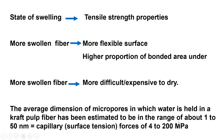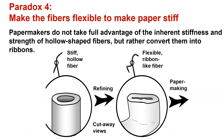Paradox number four: make fibers flexible to make paper stiff. We start with hollow stiff fibers, and then flexible fibers are what makes the paper stiff. When fibers collapse — as opposed to remaining stiff with open lumens — this is what makes strong dense paper. So this is another paradox in paper making.